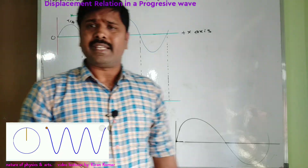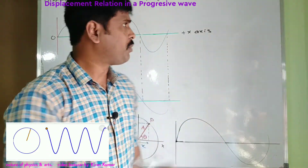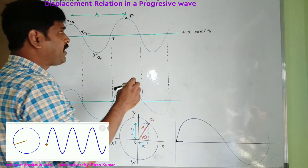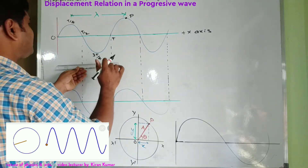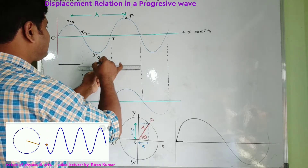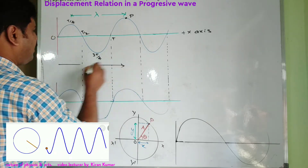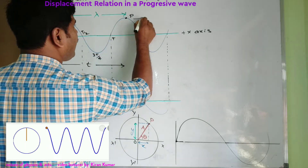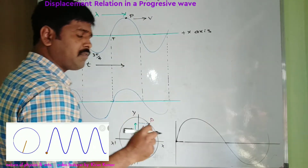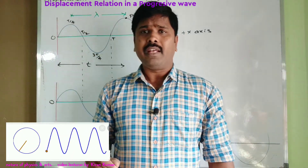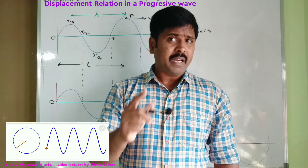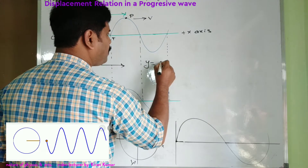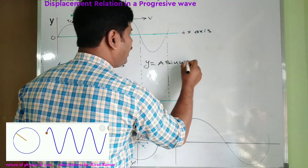Now considering a particle at position p after time t seconds. The wave is moving with a velocity v. After time t, it reaches position p. We can write the displacement after t seconds as y, which is equal to a sin(ωt).